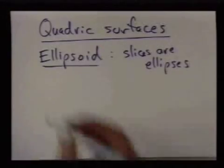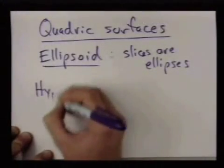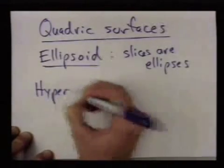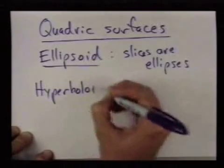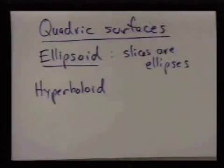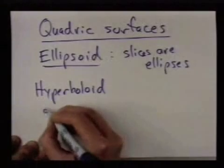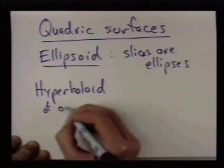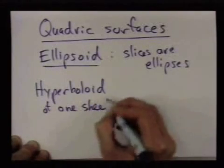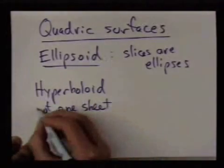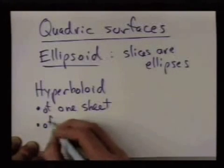Another type of quadric surface that we'll see is a hyperboloid. And there are actually two different kinds of these: the hyperboloid of one sheet and the hyperboloid of two sheets.